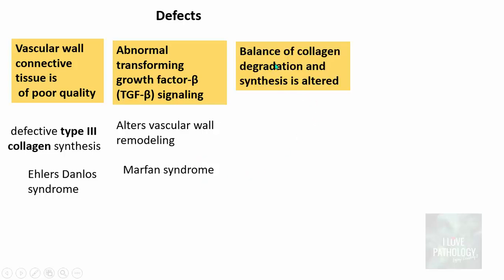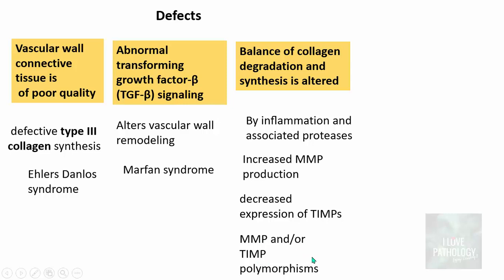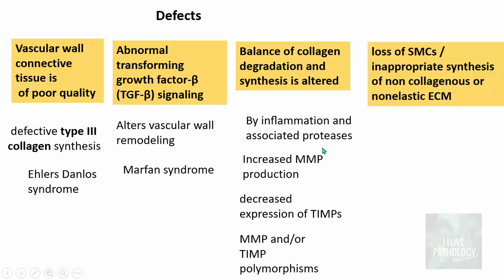The third defect is when the balance between collagen degradation and collagen synthesis is altered, which can also lead to aneurysm. This alteration is caused by inflammation and associated proteases — specifically increased production of matrix metalloproteinases (MMPs) or decreased expression of TIMPs (tissue inhibitors of metalloproteinases). Gene polymorphisms involving MMP and TIMP genes result in altered balance between collagen degradation and synthesis, weakening the wall and resulting in aneurysm.